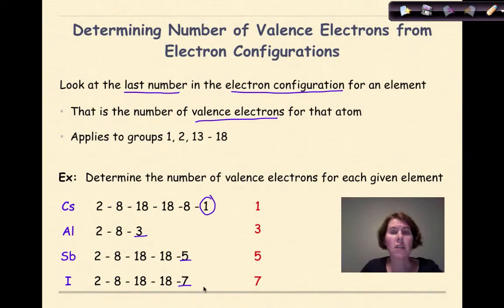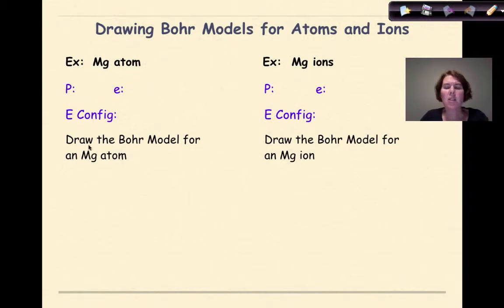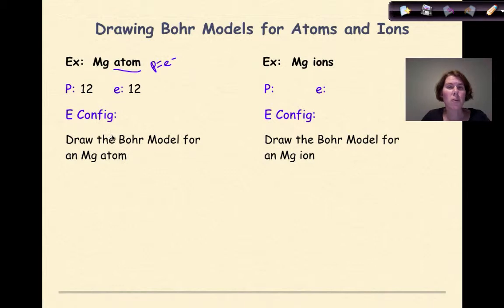Now let's draw some Bohr models for atoms and ions and use the electron configurations to identify valence electrons. Let's start with a magnesium atom. From the periodic table, magnesium has 12 protons, and since this is an atom, protons equal electrons, so I have 12 electrons. The electron configuration is 2, 8, 2 — with 2 valence electrons on the outermost shell.